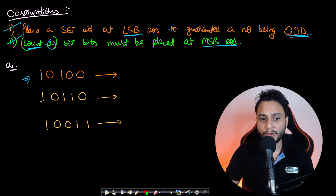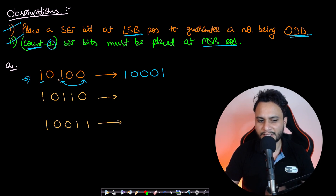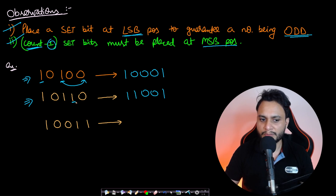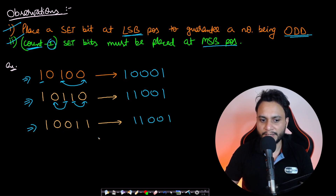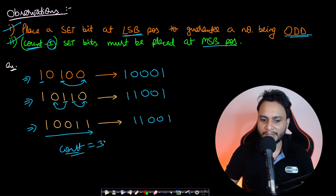For example, given 10100, the largest odd number is 10001 — the one moves to the rightmost side and the other stays at the most significant position. For 11000, the result is 11001. The algorithm is simple: count all the set bits, decrement by one, place one set bit at the end to ensure oddness, then place the remaining set bits from the left side with zeros in between.